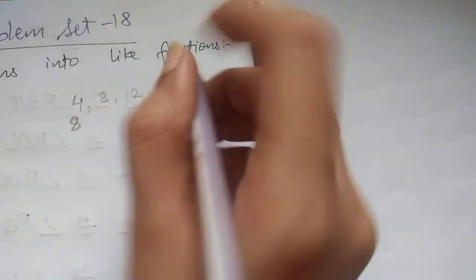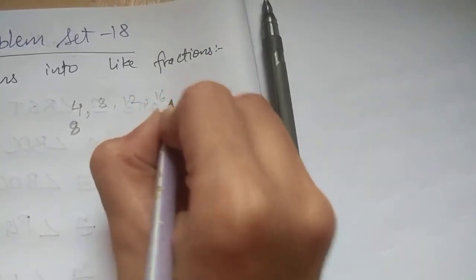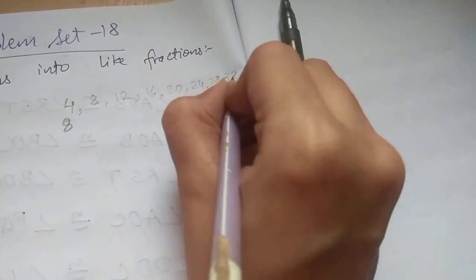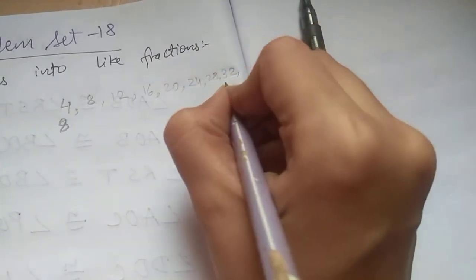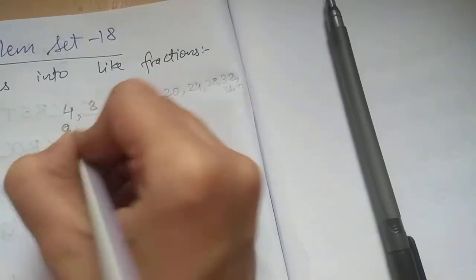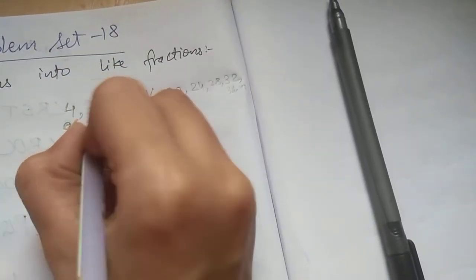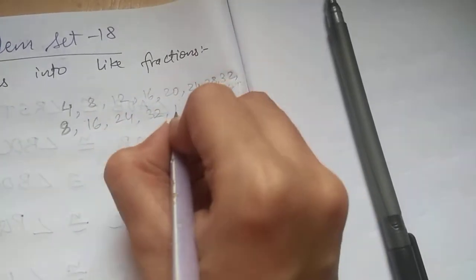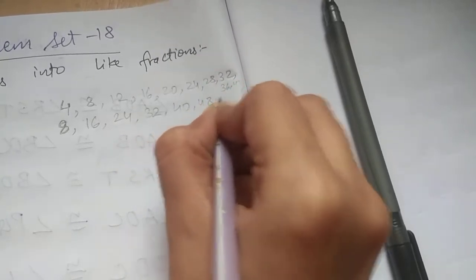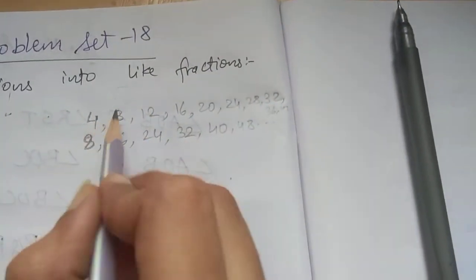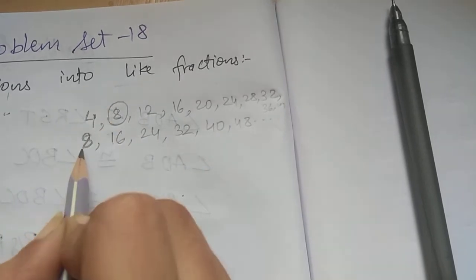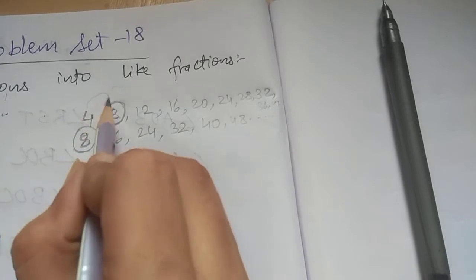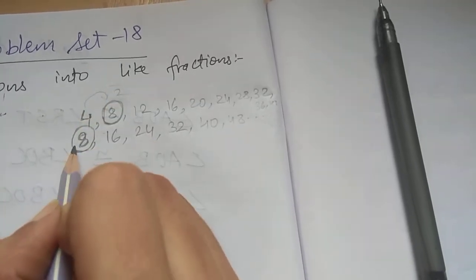So let's see 4 and 8. So 4 1s are 4, 4 2s are 8, 4 3s are 12, 4 4s are 16, 20, 24, 28, 32, 36, and 40. In this 8: 16, 24, 32, 40, 48 and so on. So the least number, the smallest number here is 8. We can see the common number here is 8.